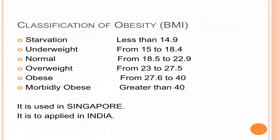For Indian persons, a BMI between 18 to 23 is normal; more than 23 up to 27.5 is overweight; more than 27.5 up to 40 is obese; and more than 40 is morbid obesity. A BMI between 15 to 18.4 is underweight, and less than 14.9 is classified as starvation. This is the chart followed in India.